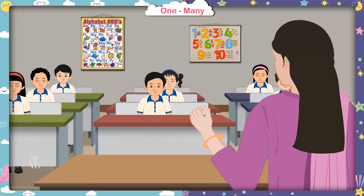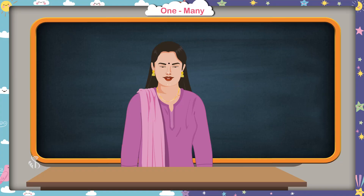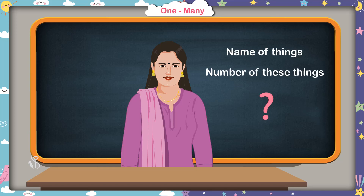Children, today we are going to learn the meaning of one and many. Come on, we will start now. I will show you some objects. You have to tell me the name and the number of these things.